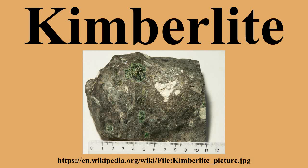Group 1 kimberlites are CO2-rich ultramafic potassic igneous rocks dominated by primary forsteritic olivine and carbonate minerals, with a trace mineral assemblage of magnesium ilmenite, chromium pyrope, almandine pyrope, chromium diopside, phlogopite, enstatite, and orthopyroxene or chromite.